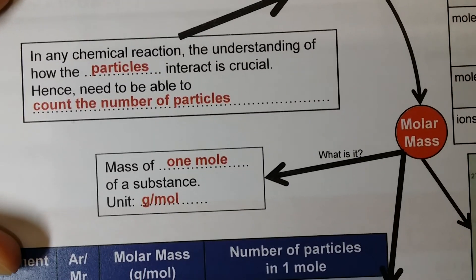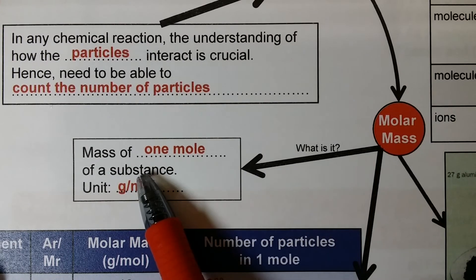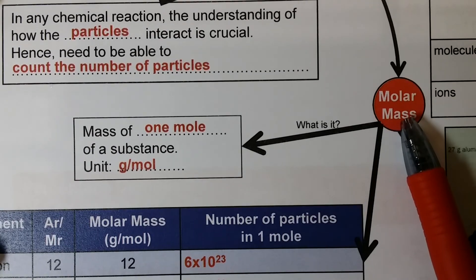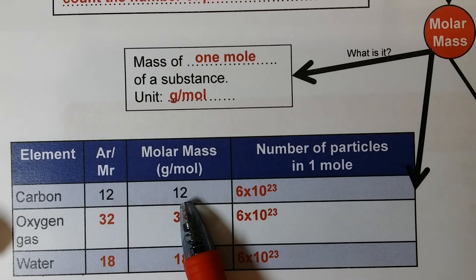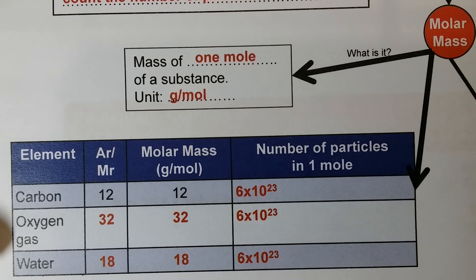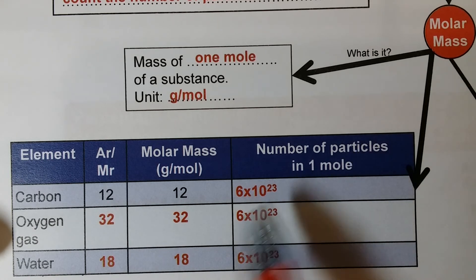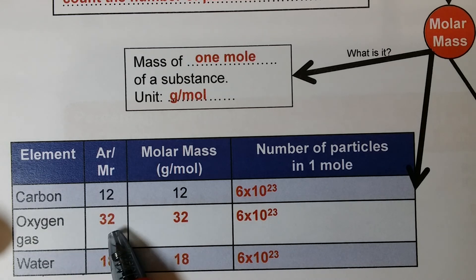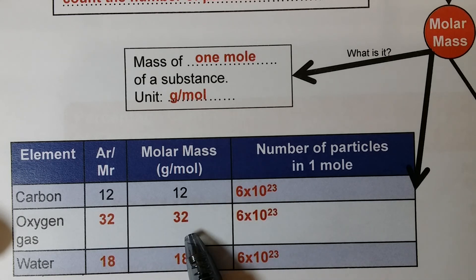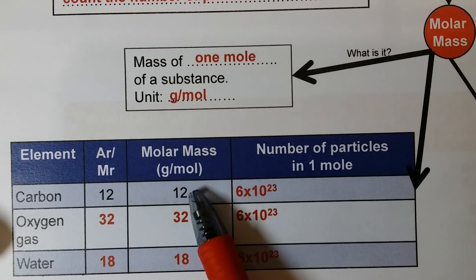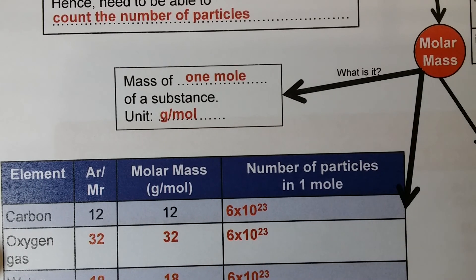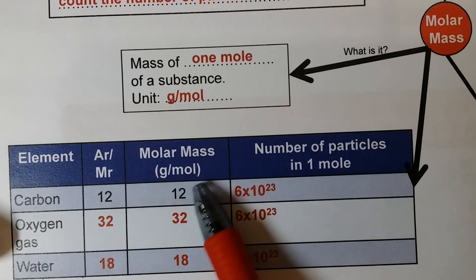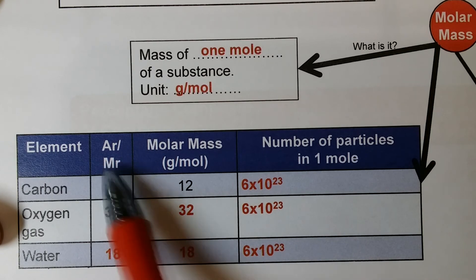The next part is about molar mass. Molar mass is the mass of 1 mole of a substance, and the unit is gram per mole. Molar mass is actually the same as the AR or MR. For example, the AR of carbon is 12, so the molar mass is 12 grams per mole. For oxygen gas (O₂), MR is 32, so the molar mass is 32 grams per mole. AR or MR and molar mass are the same numerically — except that AR/MR has no unit, while molar mass has the unit grams per mole.